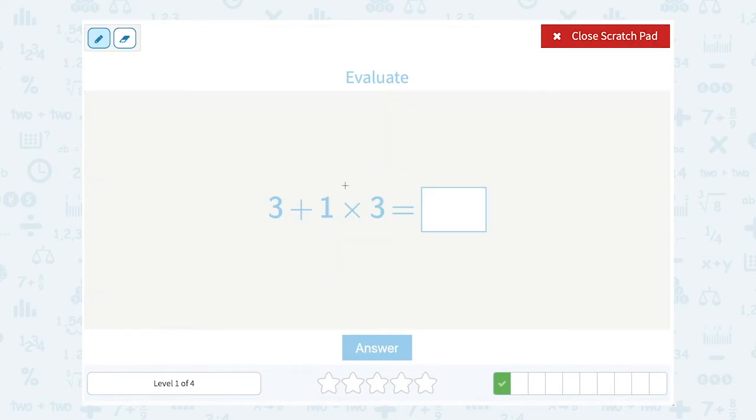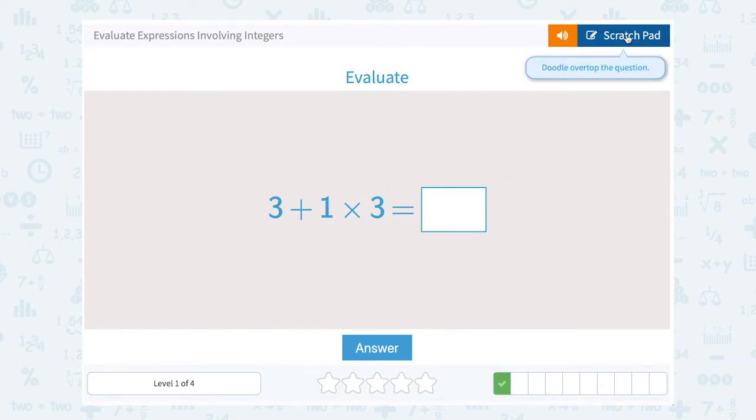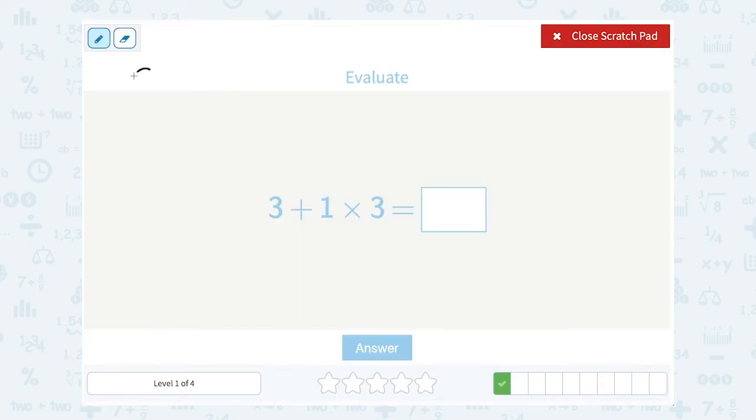3 plus 1 times 3. Now notice this time I have addition and I also have multiplication. So this is where I have to be careful and think about my order of operations.